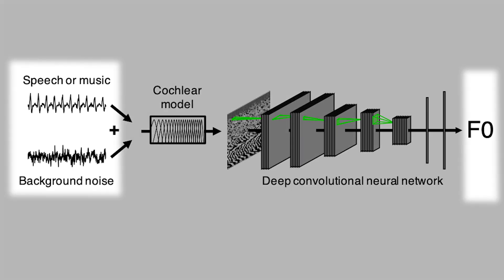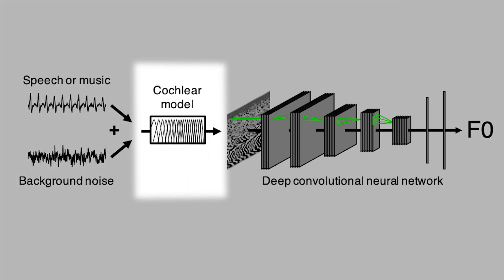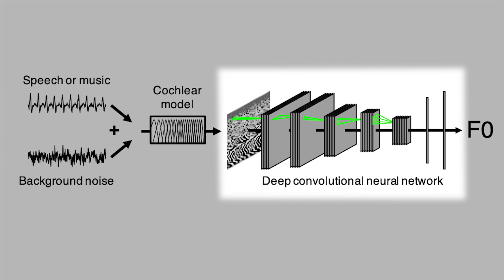There's a long history of trying to explain pitch perception mechanistically. But in this project, we instead asked why pitch perception has the properties that it does. The only constraints we put on our model are the task of estimating the fundamental frequency of natural sounds, the kinds of sounds important to human listeners such as speech and music, and the ears of our model — the hard-coded peripheral auditory model used as the network's input representation. We then let the model learn whatever strategy it could to estimate the fundamental frequency of those sounds.